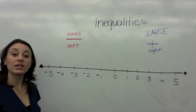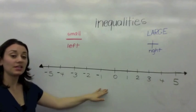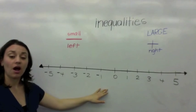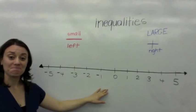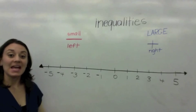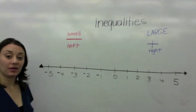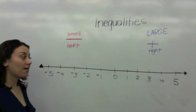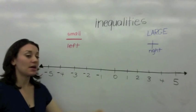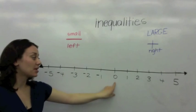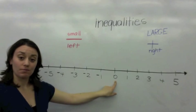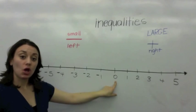Yesterday, we learned about integers on a number line. In the middle of a number line is the number 0.